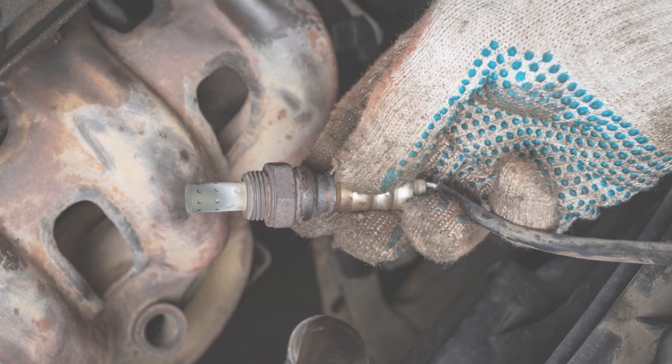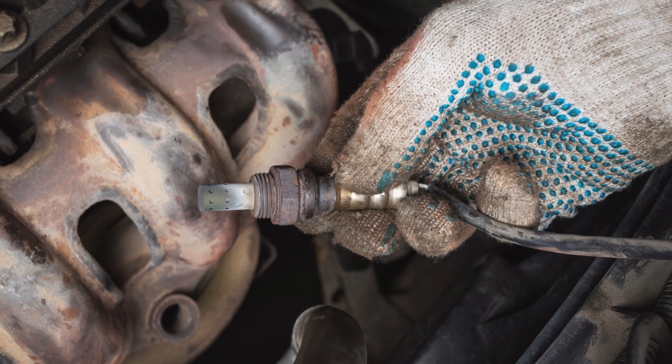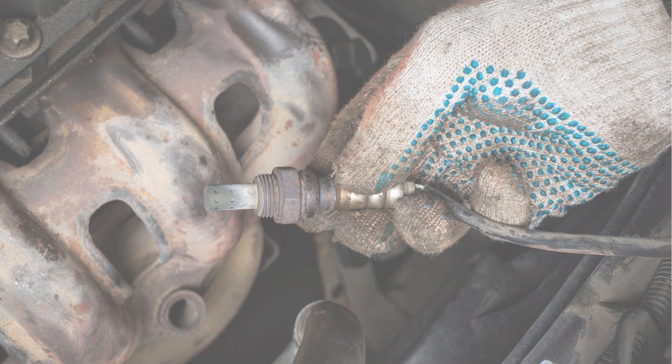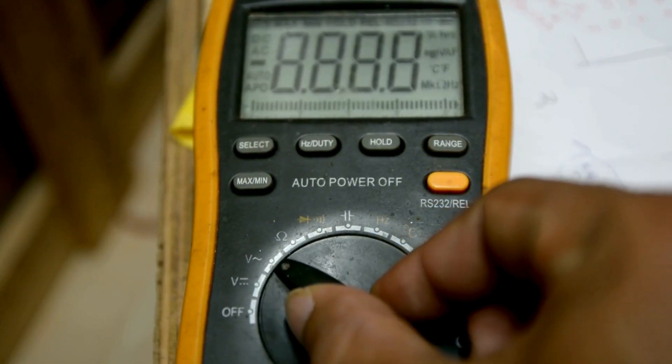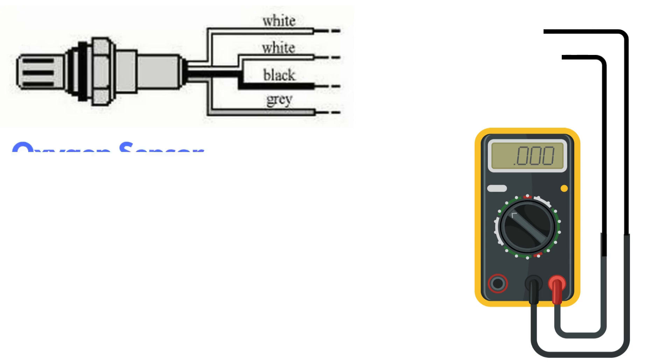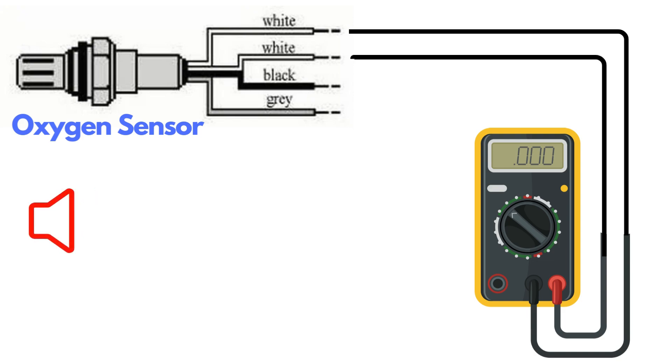Over time, the heater circuit can burn out and stop functioning properly. To test the heater circuit, you'll need a multimeter. Set the multimeter to check for continuity, then place the probes on the two heater wires. If the circuit has continuity, the multimeter will beep, indicating that the heater is functioning.